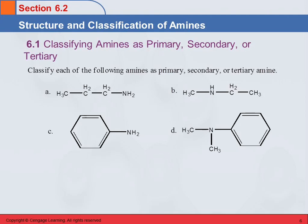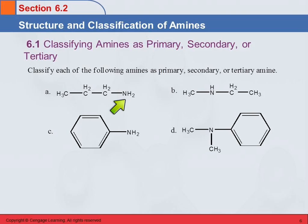Let's practice classifying amines. For the first one: is it primary, secondary, or tertiary? Look at the nitrogen — how many R groups does it have? It just has one. It's bonded to one group and has two hydrogens, so that's a primary amine.